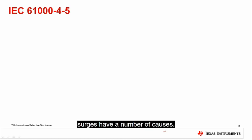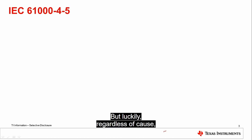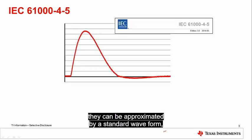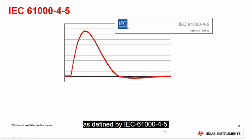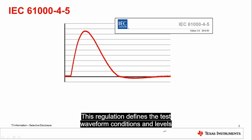As discussed in the previous video, surges have a number of causes, but luckily, regardless of cause, they can be approximated by a standard waveform as defined by IEC 61,000-4-5. This regulation defines the test waveform conditions and levels that ensure a system is robustly surge protected. Best practice is to ensure that all systems at risk of surges can be guaranteed against some level of IEC 61,000-4-5.